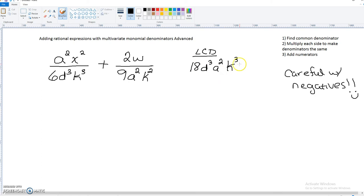So this is what our denominator is going to be. We need to make these denominators become this. I'm going to go ahead and write this down here because we know that this is what we need: 18d³a²k³. Same thing here.